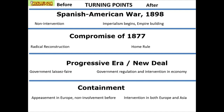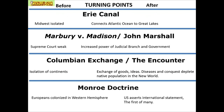More turning points: the Spanish-American War makes America imperialistic. The Compromise of 1877 ends Reconstruction and leads to Home Rule. The Progressive Era and New Deal are turning points toward a more interventionist government. Containment with the Cold War is a big change in foreign policy as America tries to stop the spread of communism. The Erie Canal connects the country from the Atlantic Ocean to the Great Lakes. Marbury vs. Madison establishes judicial review. The Columbian Exchange brings new things to the New World. The Monroe Doctrine asserts that Europeans cannot make new colonies in the Western Hemisphere.